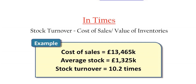The example provided by Tutor2U: the cost of sales is £13,465 and the average stock value is £1,325. Divide them and the result is 10.2 times — so within this given time period they turn over their stock 10.2 times.